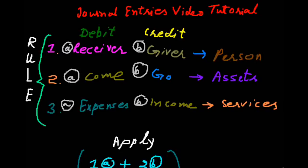Welcome to accounting education. Today we will learn about how to pass journal entries. Journal entries are passed on the basis of the double entry system. With the double entry system, we have two sides — one account will be debit and the other account will be credit.